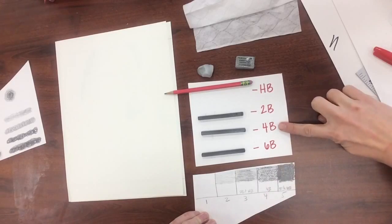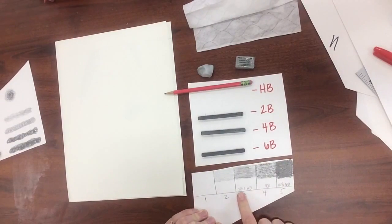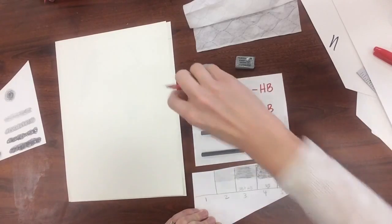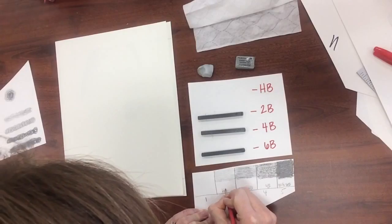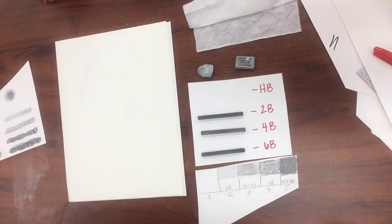Number 4 is 4B. Number 3 is 2B and HB. Number 2, oh, I forgot to write that. It's just HB. And then number 1 obviously is nothing.